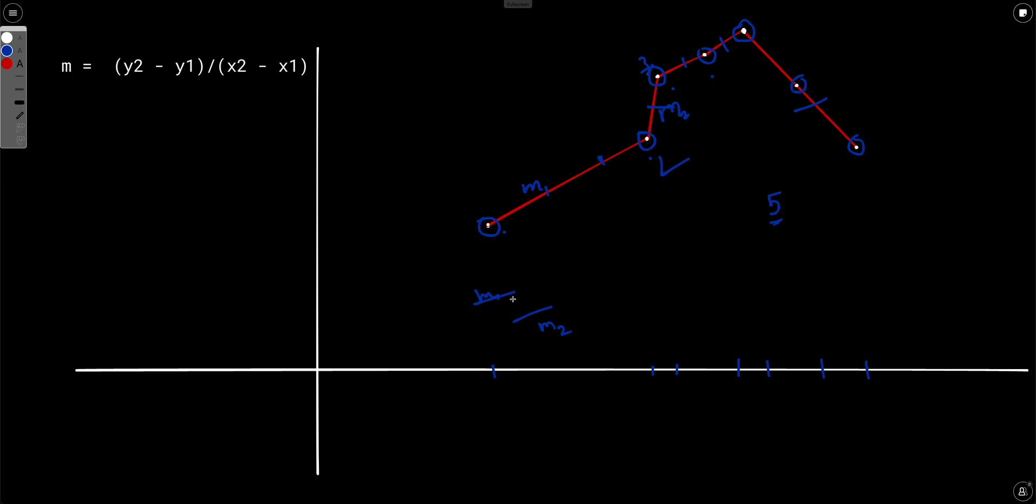And there is a point, the point two, that is common between these two line segments. So these two lines are parallel and they're passing through the same point.